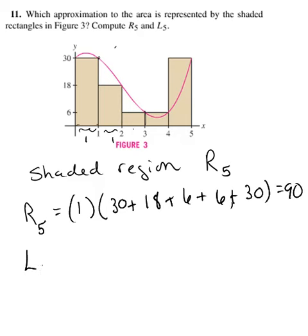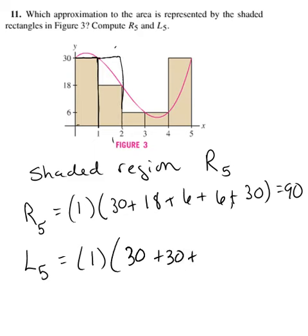Now if they had done L sub 5 instead, the delta x, the length of the subinterval, is still 1. So L sub 5 would be using this left one, so that would be 30. Now at 1, on the subinterval from 1 to 2, using the left-hand endpoint you would have also had 30. So you'd have 30, 30, and then from 2 to 3 you would have had 18. From 3 to 4 it would have been the same, 6.